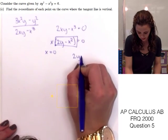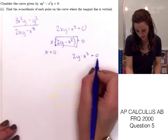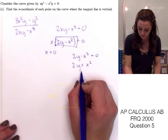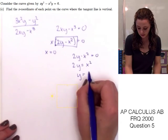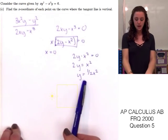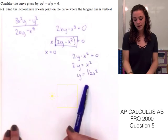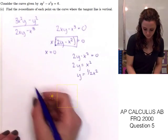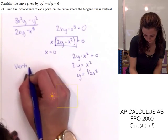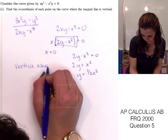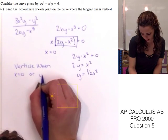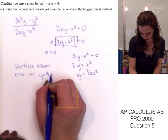Setting 2y minus x² equals 0: adding x² to the right side gives 2y equals x², and dividing by 2 gives y equals ½x². So the tangent line is vertical when x equals 0 or when y equals ½x². That's your final answer for Part C.